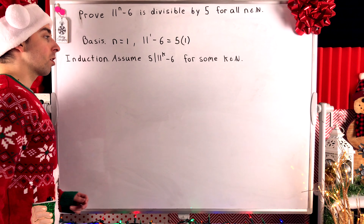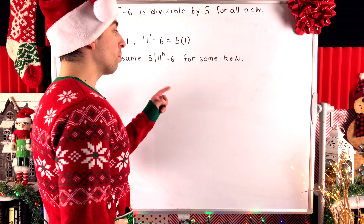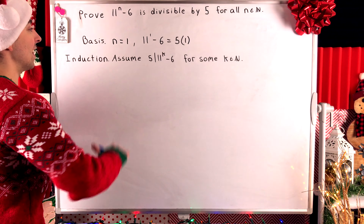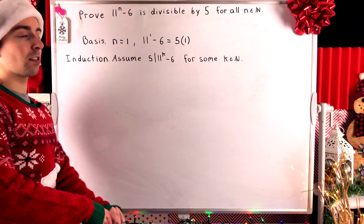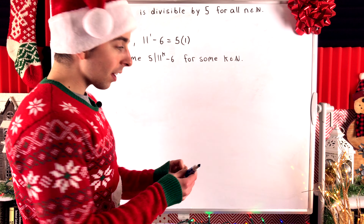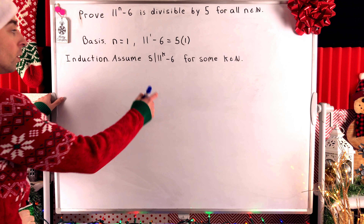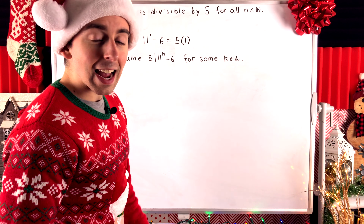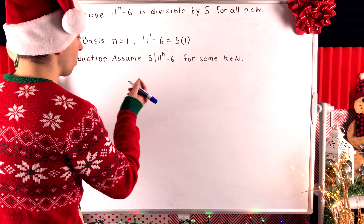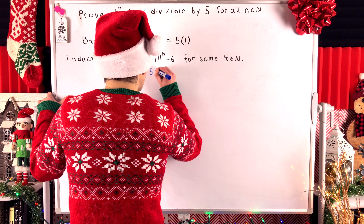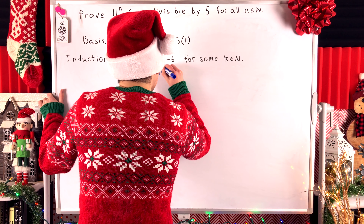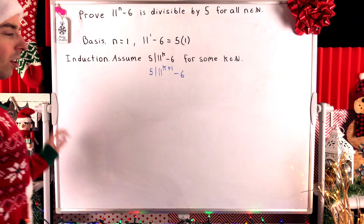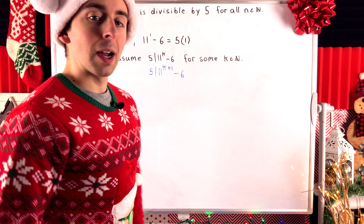We just need to show that our statement holds when n equals 1, because that's the first natural number. When n equals 1, does our result hold? Yes it does. 11 to the power of 1 minus 6 is equal to 11 minus 6, which equals 5. 5 is definitely divisible by 5. Being divisible by 5 means that you're an integer multiple of 5, and 5 is the first integer multiple of 5. So that's the basis step — our result is true for the first natural number.